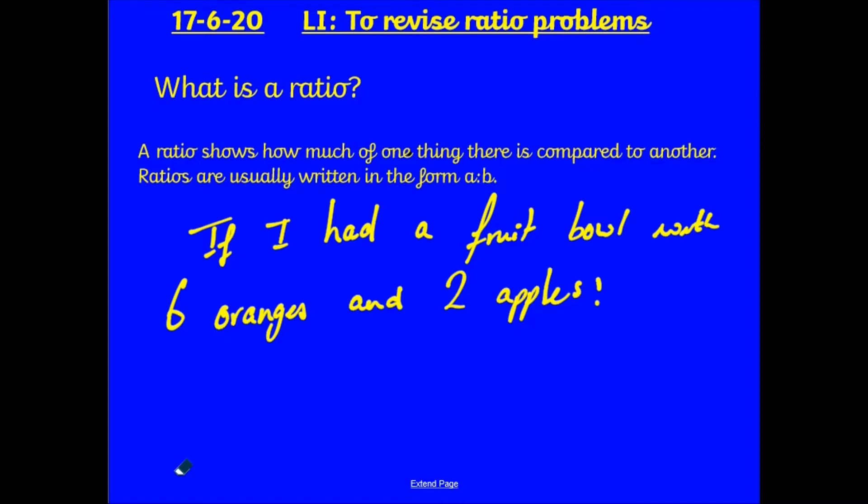What is a ratio? Well, a ratio shows how much of one thing there is compared to another. Ratios are usually written in the form A colon B, or A colon B colon C. For example, if I had a fruit bowl with 6 oranges and 2 apples, there are 6 oranges to every 2 apples. That's a ratio of 6 to 2.